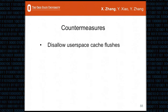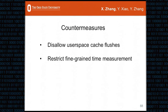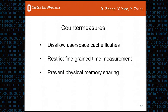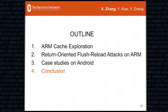Here are some possible countermeasures. One simple solution is to disallow user-space cache flushes, but this has side effects such as disabling self-modifying code. Another approach is to restrict fine-grained time measurement so the attacker cannot measure time accurately, but this would make many benign apps and system services that rely on accurate time measurement unstable. One promising solution is to prevent physical memory sharing between attacker and victim; the copy-on-access mechanism proposed in the next paper in this session is promising.